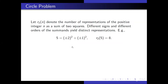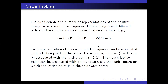R₂(n) is the number of representations of n as a sum of two squares, where different signs and different orders yield distinct representations. So 5 equals (±2)² + (±1)², giving R₂(5) = 8. Each representation can be associated with a lattice point in the plane — for example, 5 = (−2)² + 1² corresponds to the point (−2, 1). Each lattice point is then associated with a unit square; let's take the square such that the lattice point is in the southwest corner.